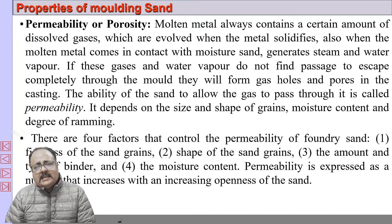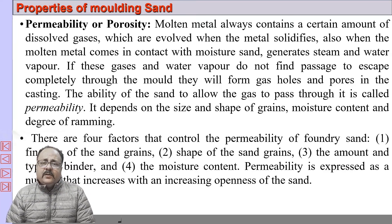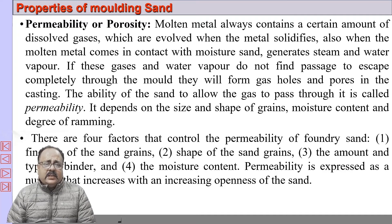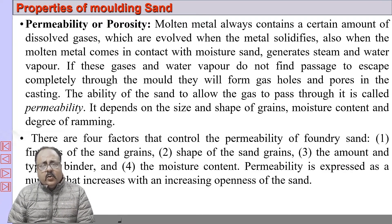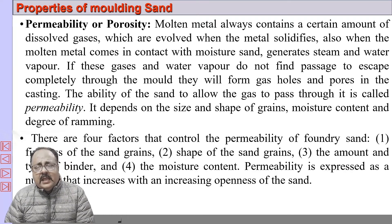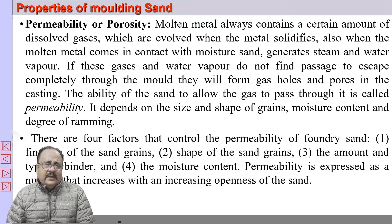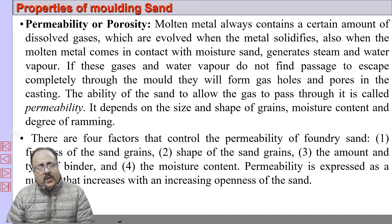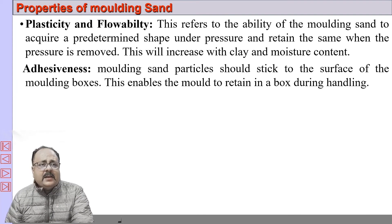However, if permeability is too high, the surface of the casting will be rough — so there must be a trade-off between permeability and surface finish. Permeability depends on grain size and fineness: fine grains give less permeability, coarse grains give more. Angular-shaped grains give higher permeability; round grains give lower permeability. More clay or binder reduces permeability. Moisture initially increases permeability, then decreases it at higher levels.